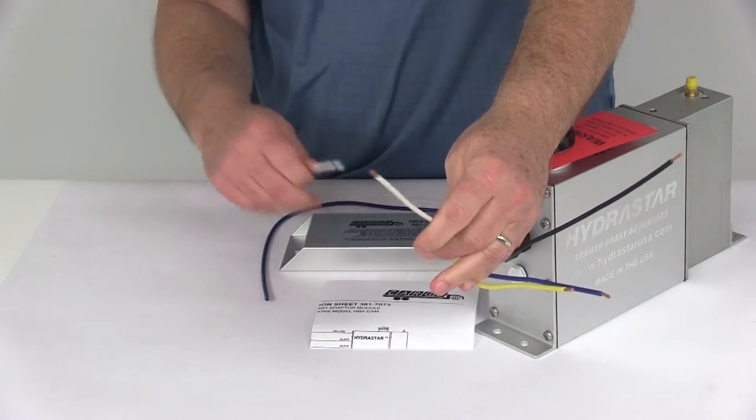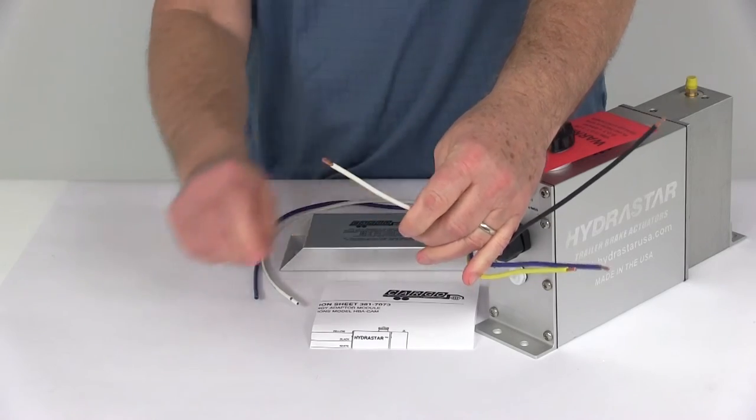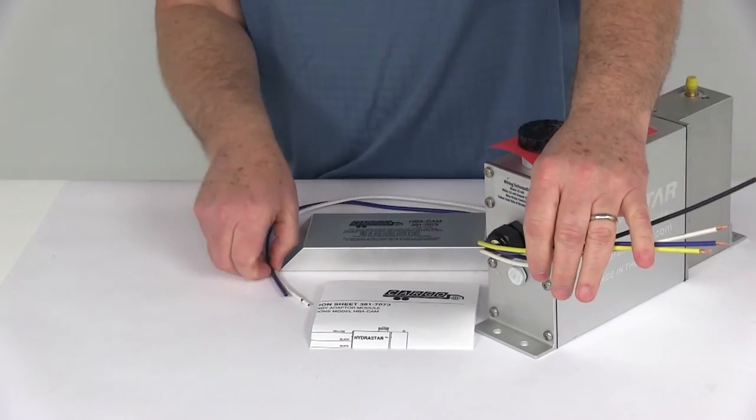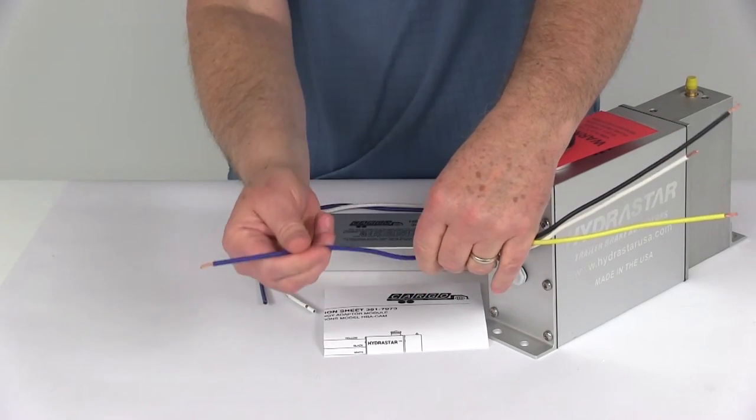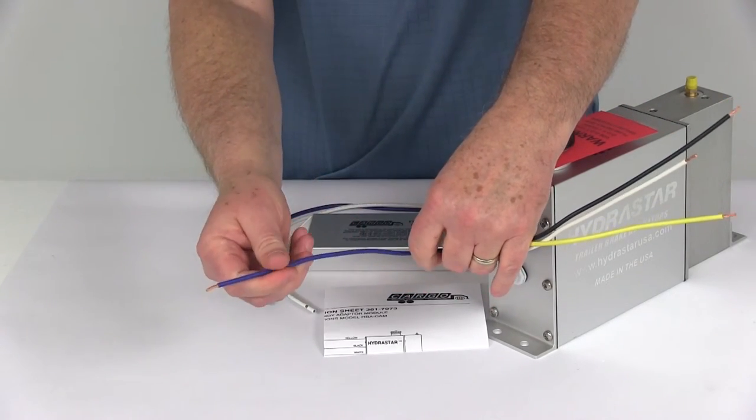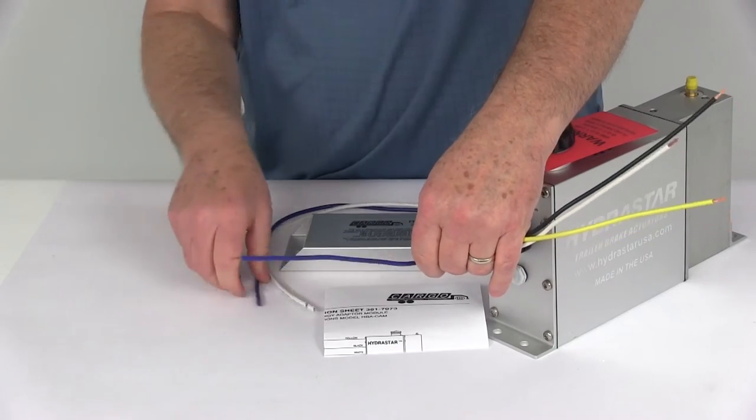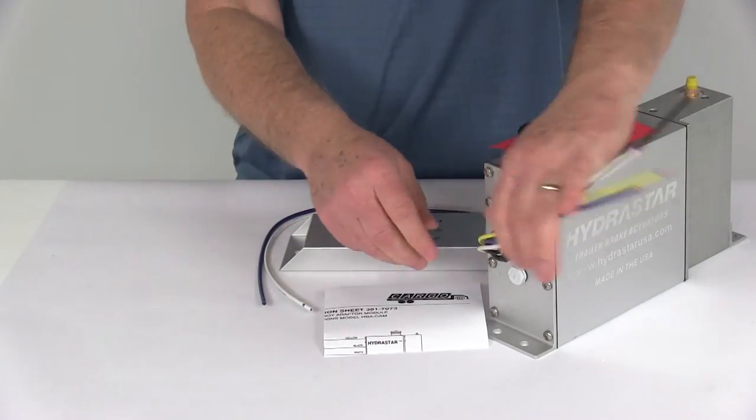And then the blue wire on this module, this will splice into the blue wire that comes to the actuator. This is the wire on the actuator that goes to the brake controller output wire from the tow vehicle. So you just splice the blue wire into that wire.